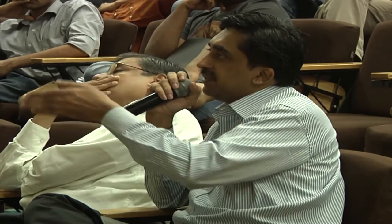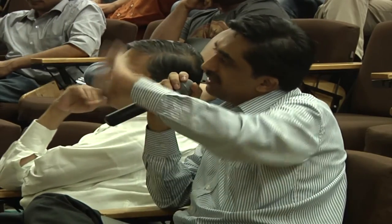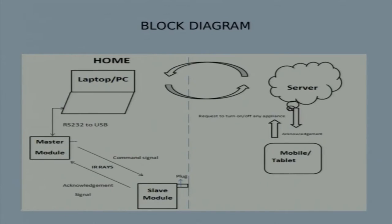A concern was raised: while the interfacing circuit costs only 80-100 rupees, adding the cost of the server, bandwidth, and other parameters would push the product back into the luxury segment. The question was whether the server is mandatory or if connectivity can be achieved another way. The response was that to access from a mobile phone over a network, some form of network connectivity is required to send data to the master module.